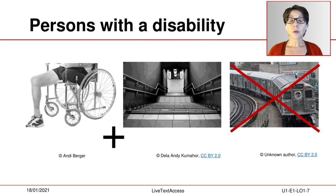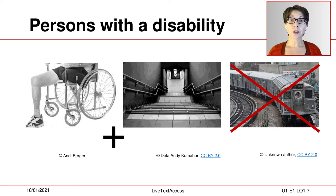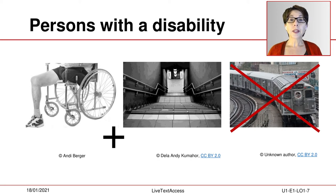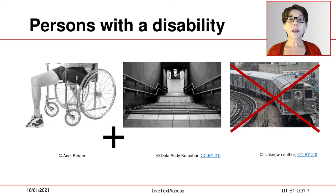Types of disability. Article 1 of the Convention on the Rights of Persons with Disabilities, in short CRPD, explains that disability emerges when a person with a long-term impairment encounters barriers that hinder him or her from participating effectively on an equal basis. The underlying idea is that disability occurs in the interaction of a person with an impairment and barriers of an environment. The example on the screen illustrates this idea.